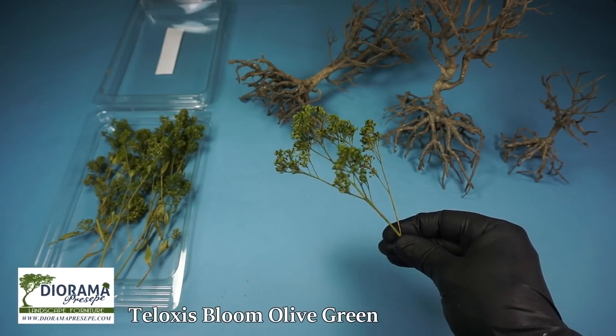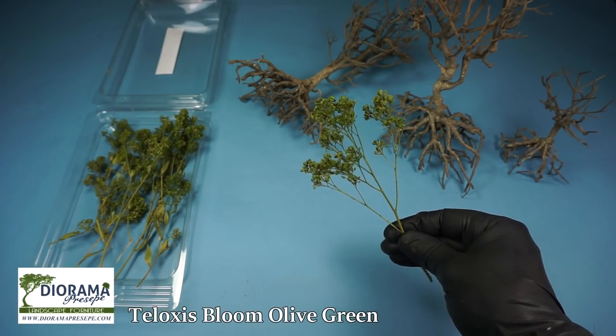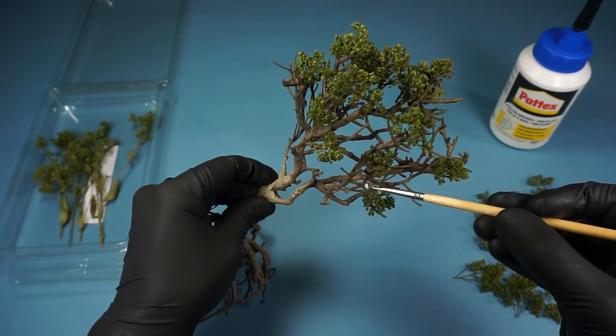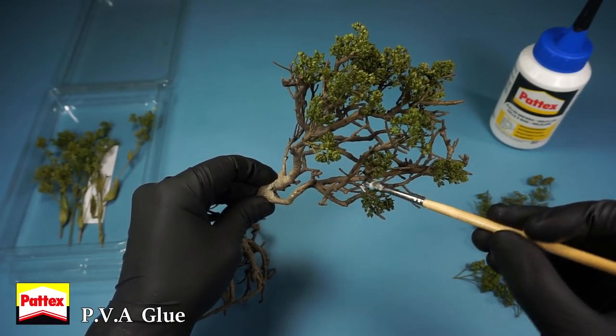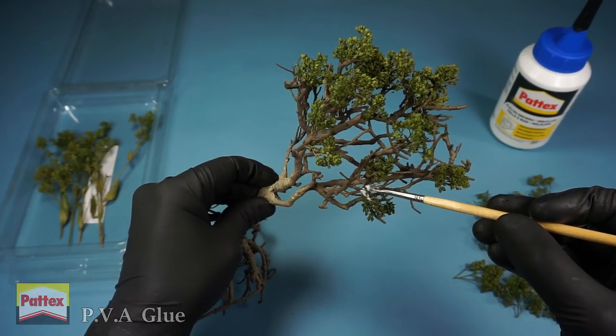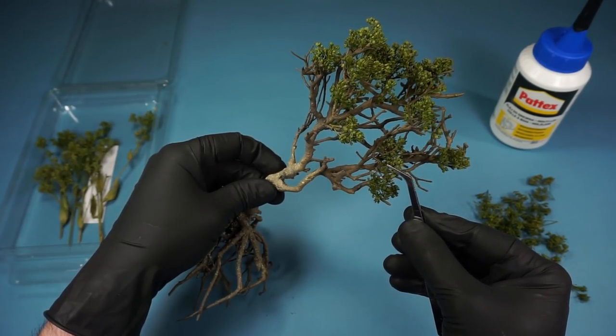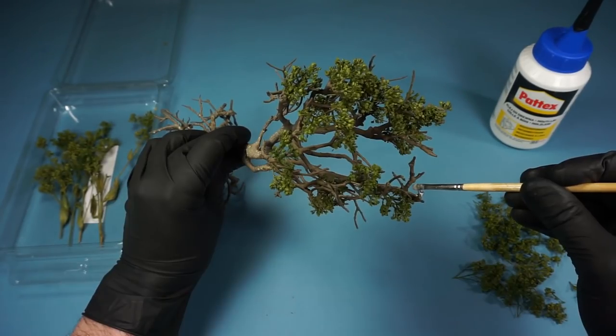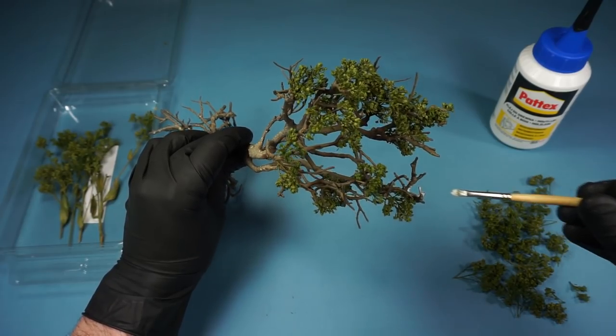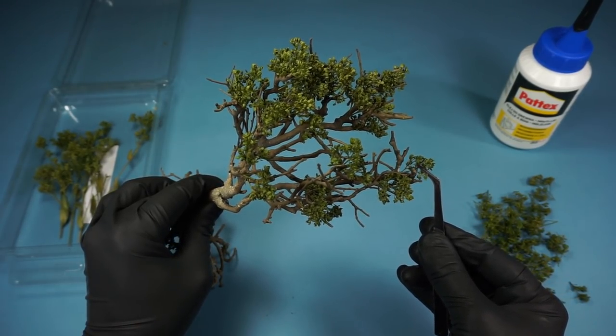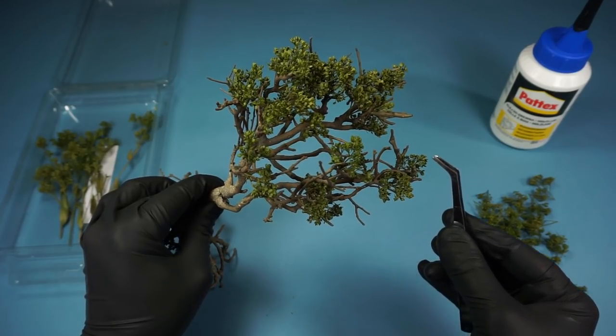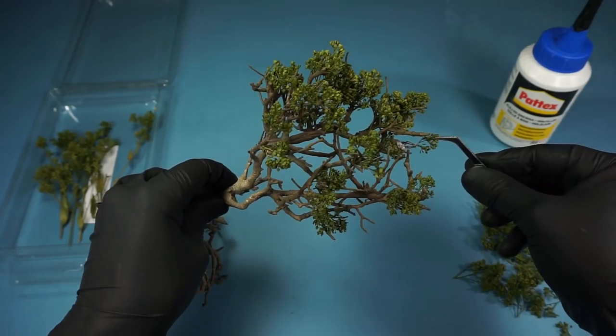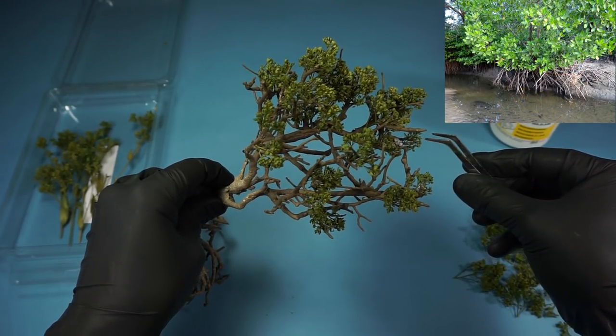As the foliage for the mangrove trees I'll be using these natural preserved plants. A special thanks to Diorama Presipe for providing these nice looking materials. The foliage is added onto the branches using PVA glue. I always like to work with natural products and I thought these worked really well to simulate that typical lush mangrove foliage.